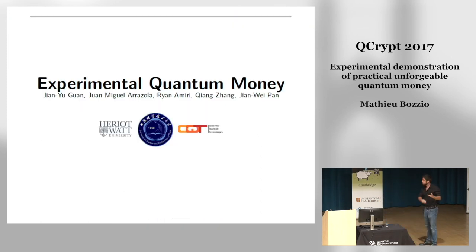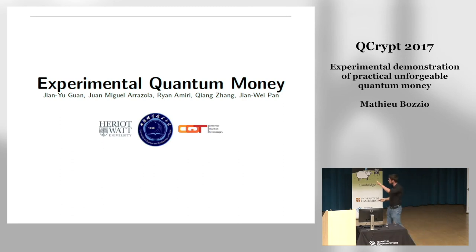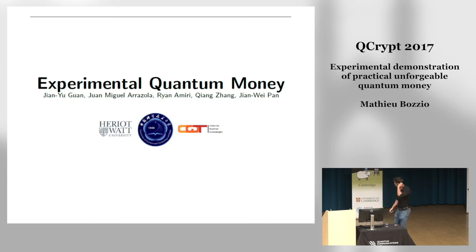Now I'll talk on behalf of the Shanghai/Jiang Kai team — apologies if I sometimes say 'we'. The idea is the same: the first experimental implementation of quantum money, but not using qubit pairs. The encoding is different, though you'll see the results are fairly similar.